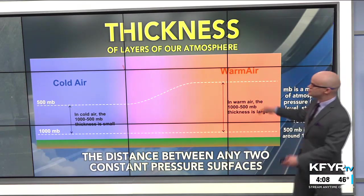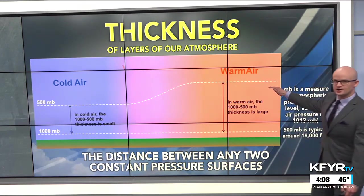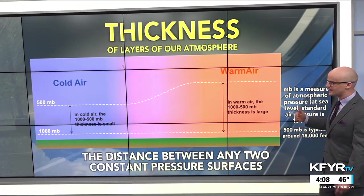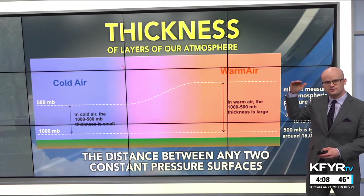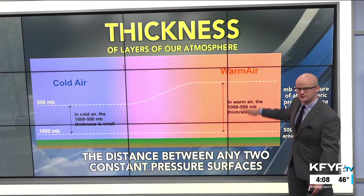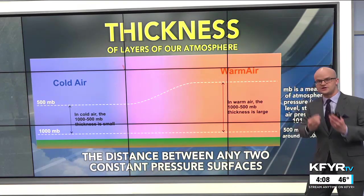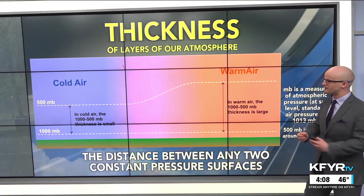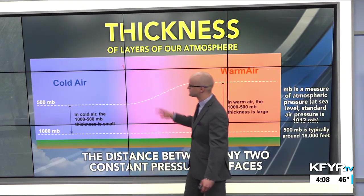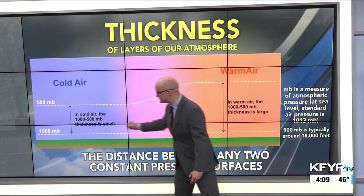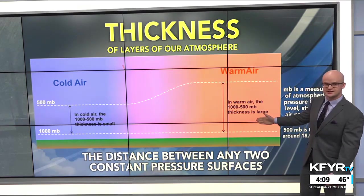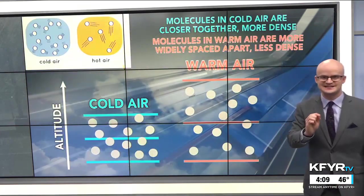Meteorologists usually compare the 1,000 millibar constant pressure surface, which is right around ground level, to the 500 millibar constant pressure surface, which is typically around 18,000 feet above our heads — about halfway up to where planes fly at cruising altitude. When we compare this 1,000 to 500 millibar constant pressure surface, we can figure out where cold air masses versus warm air masses are, based on the distance between those constant pressure surfaces.